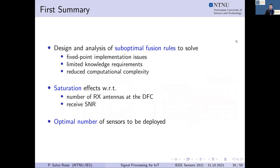In summary for channel-aware MIMO decision fusion, we have presented different fusion rules with different performance in terms of probability of detection and false alarm, knowledge requirements, and computational complexity. We have seen how they behave depending on different system parameters, and how this is useful for understanding saturation effects with respect to the number of receive antennas to employ or the optimum number of sensors to deploy.